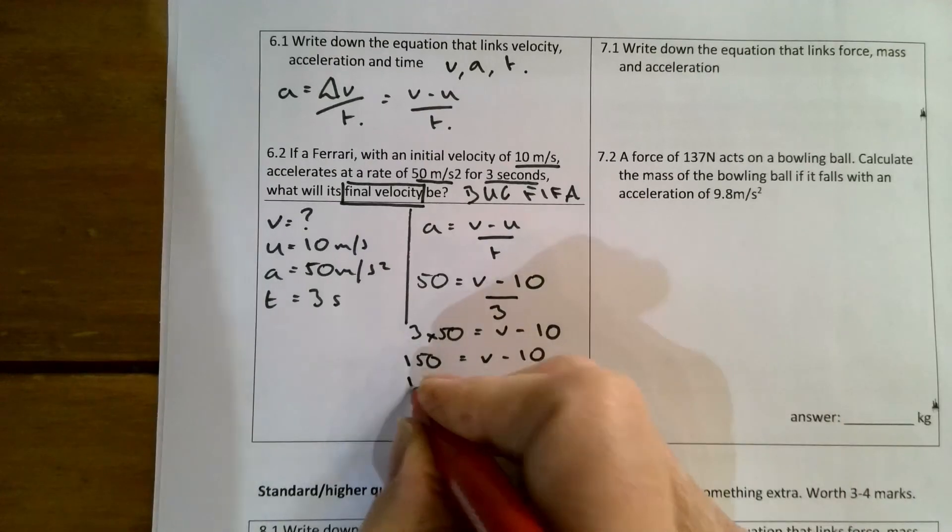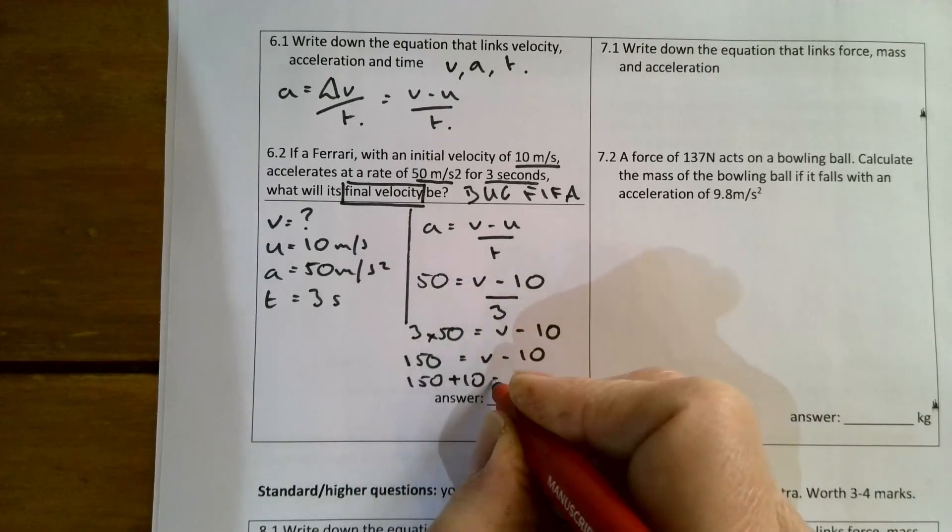Moving that over to the other side will give me 150 plus 10, which equals v.